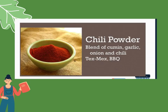Next, chili powder. Chili powder is a blend of cumin, garlic, onion, and chili — essentially chili labuyo combined with cumin, onion, and garlic. This is common in Tex-Mex food or usually added in barbecue.